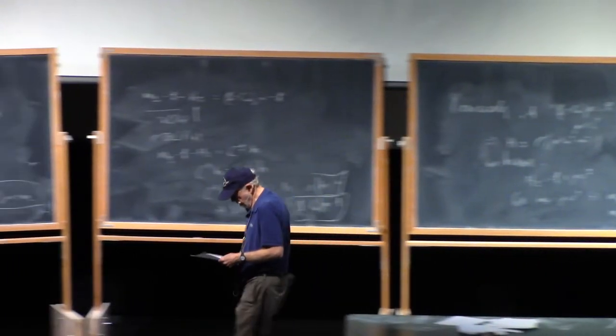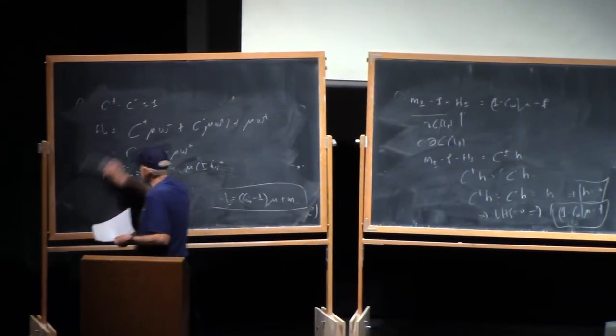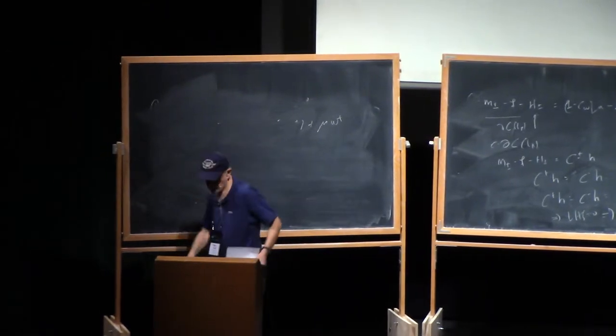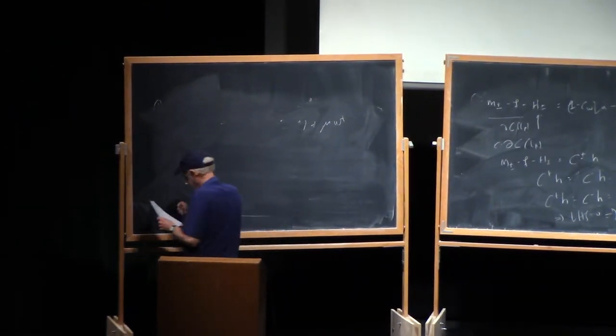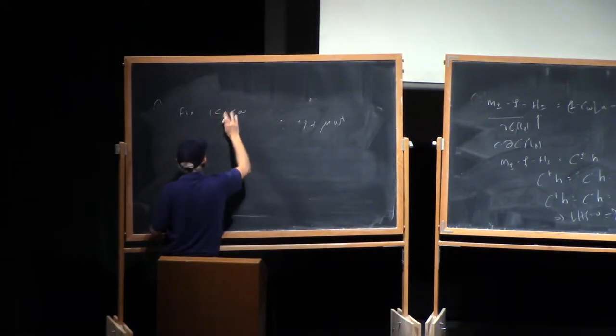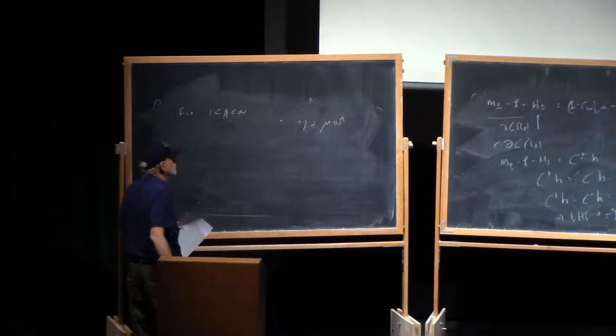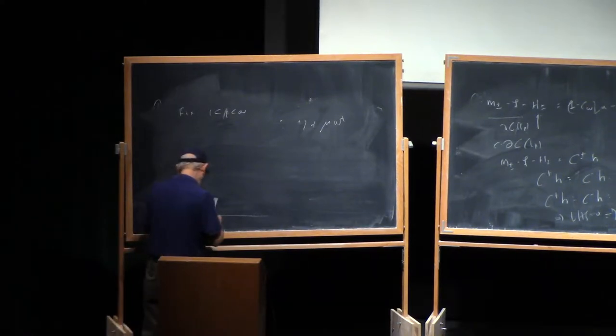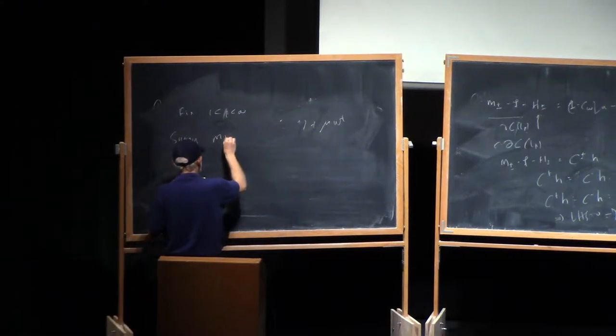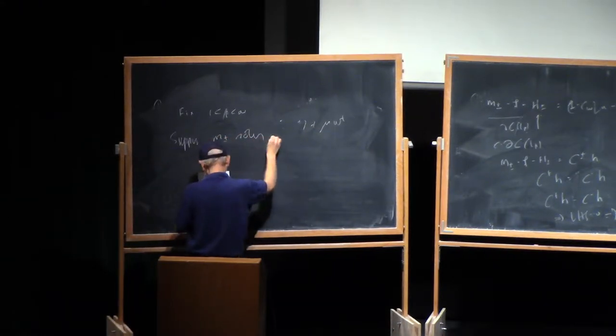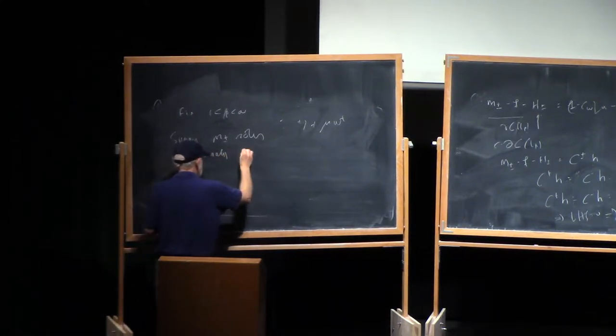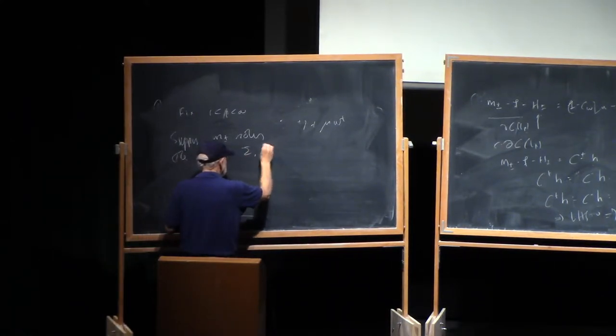So now we have a theorem. So fix. Okay. Suppose M plus minus solves the normalized Riemann-Hilbert problem sigma b.